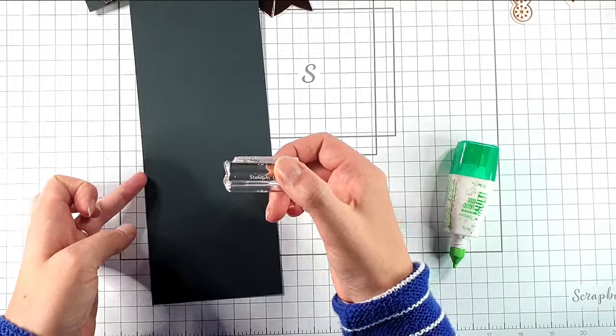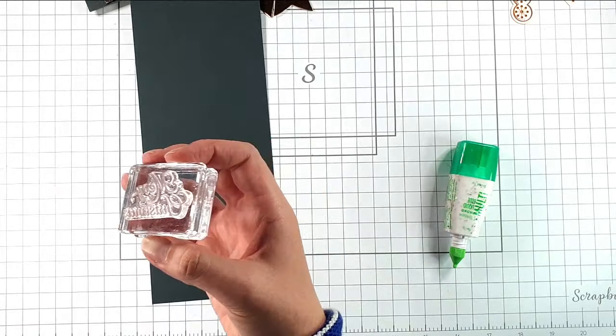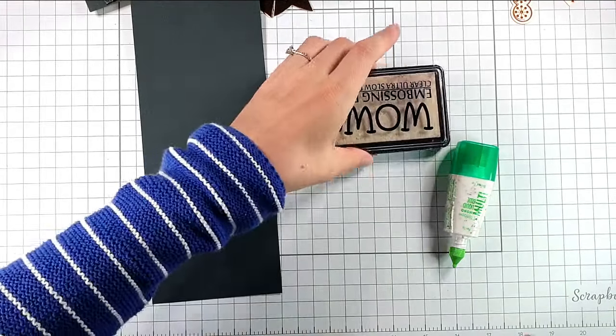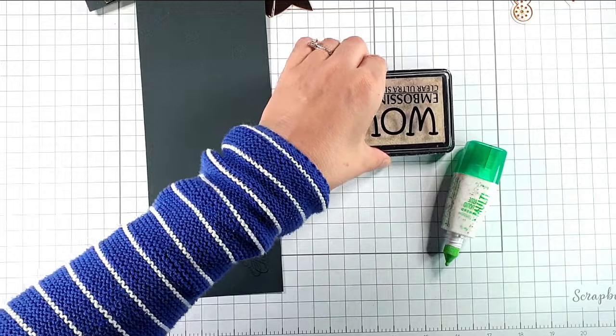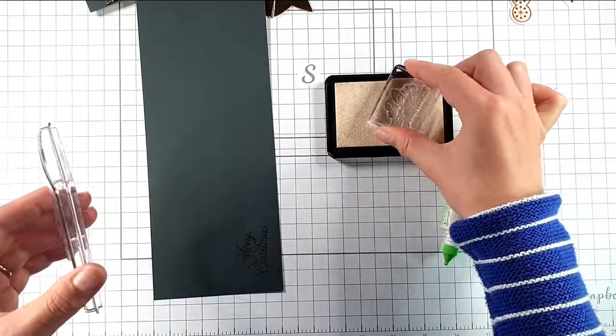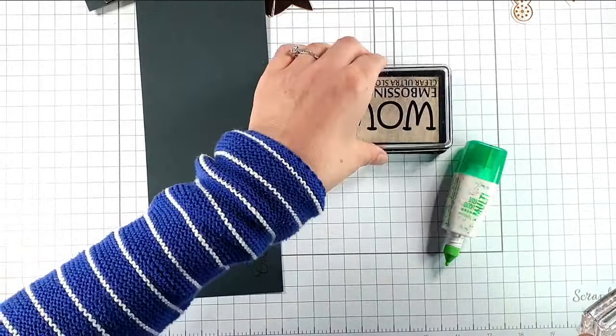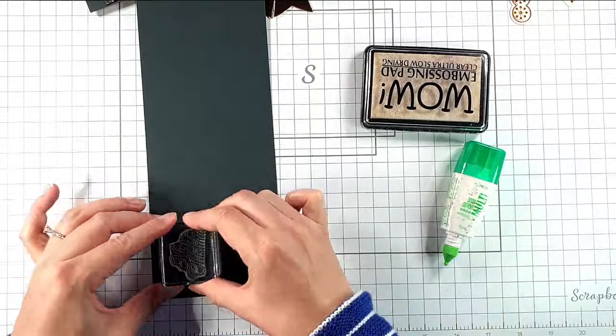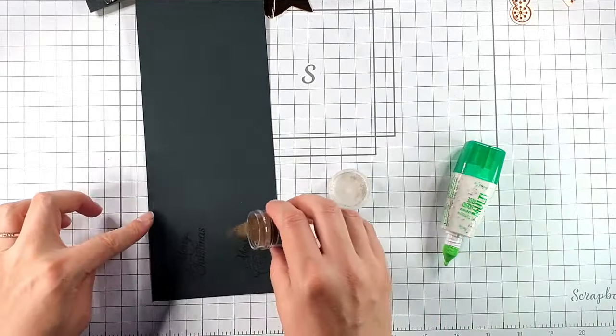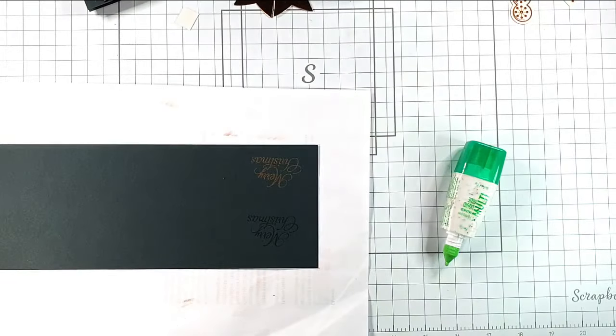So then I'm going to stamp my Merry Christmas sentiment and I'm going to heat emboss that. Actually I'm going to try out a couple of colors of embossing powder to see which one goes best. So I'm going to stamp that twice. So I'm going to try out my normal gold embossing powder. I'm also going to try some copper embossing powder.